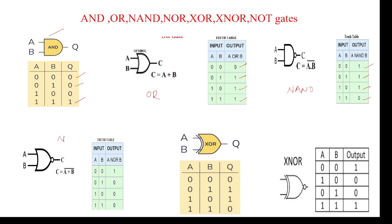This is the NOR gate. NOR gate output is (A+B) bar. For NOR: 0+0=0, bar means 1; 0+1=1, bar means 0; 1+0=1, bar means 0; 1+1=1, bar means 0. This is the XOR gate.